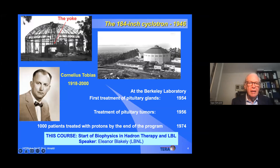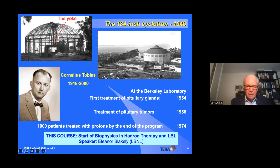The starting point of all this was Berkeley, where Bob Wilson was a student of Lawrence. In 1946 the 184-inch cyclotron was built — an enormous machine. An essential figure was Cornelius Tobias, born in 1918 and died in 2000, who guided activities that started in 1954 — the same year CERN was founded, which I always find interesting.